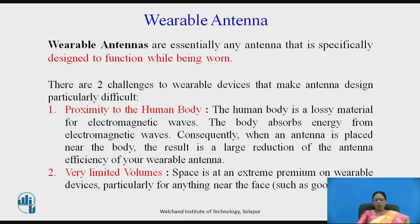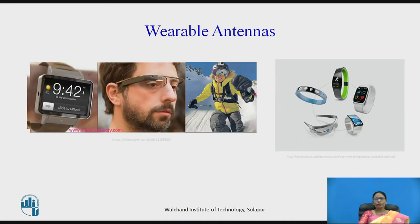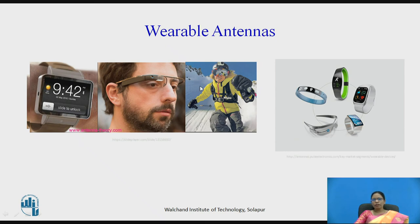Examples of wearable antenna applications include a smart watch using an antenna, Google Glass using a Bluetooth antenna, and a Nike shoe using a Bluetooth antenna. The Nike shoe contains an active antenna that sends data to a mobile device in your pocket, delivering information through the shoe.